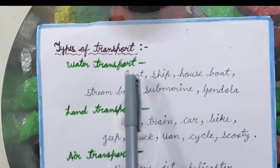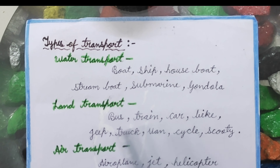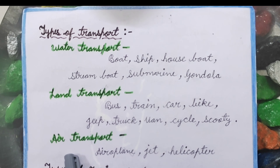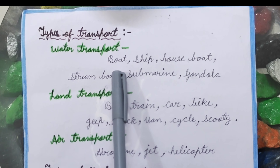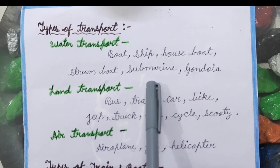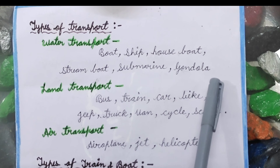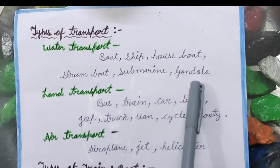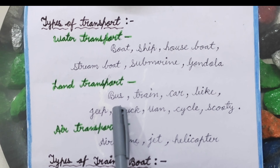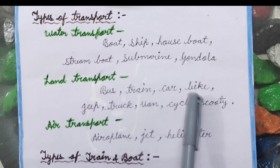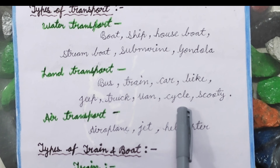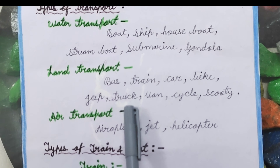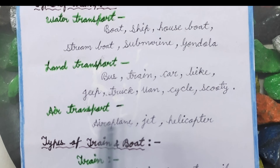Types of Transport. There are three types of transport: Water transport, Land transport, and Air transport. Water transport includes Boat, Ship, Houseboat, Steamboat, Submarine, and Gondola. Land transport includes Bus, Train, Car, Bike, Jeep, Truck, Van, Cycle, and Scooty.